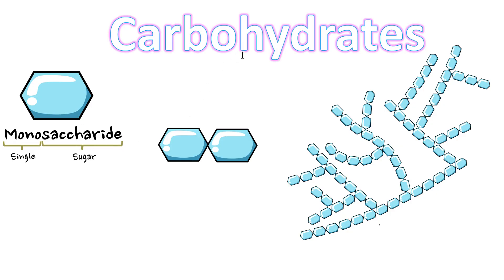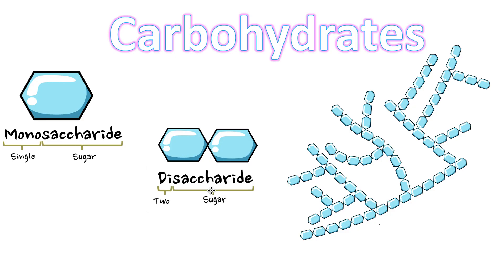'Saccharide' means sugar, so carbohydrate is essentially the fancy name for sugar. The smallest building block is a monosaccharide, or single sugar. When you put two monosaccharides together, you get a disaccharide — 'di' means two — so now you have two sugars joined together.